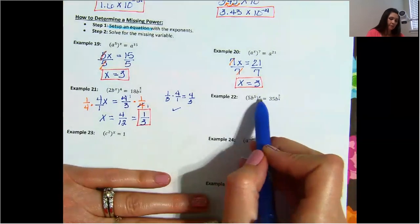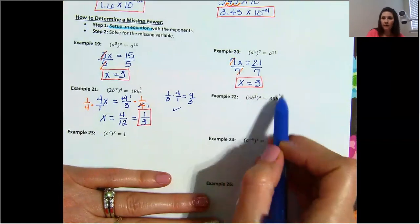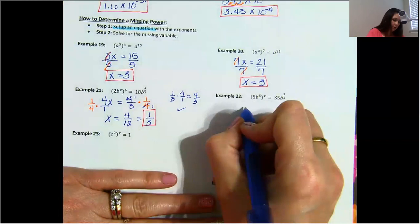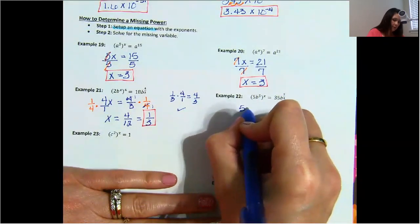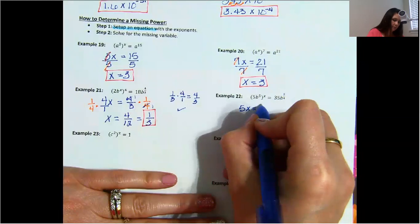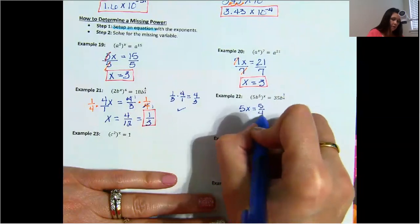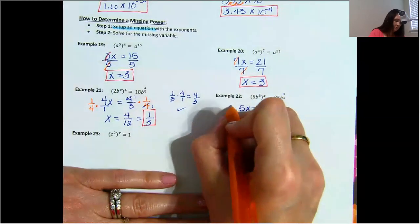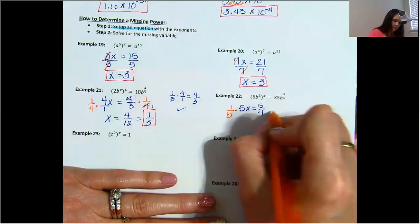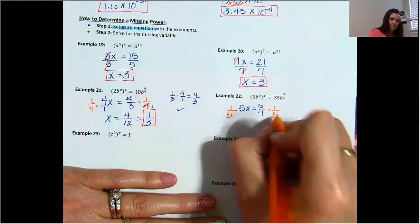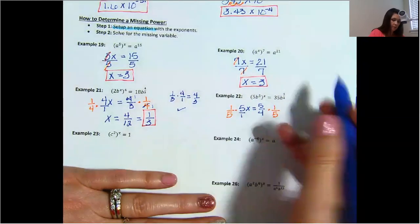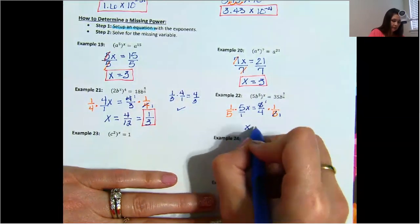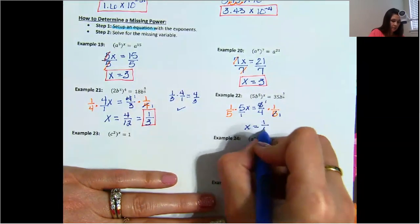Example 22: 5 times x is going to equal 5/4. We don't have to worry about the 35 or the 5 in this case. So 5x equals 5/4 — multiply by the reciprocal of 1/5. Cross simplify, and x gives us 1/4.